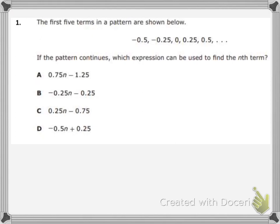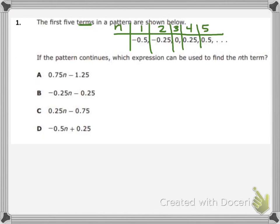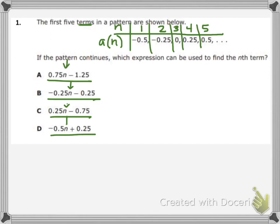Here's an example — an older star question. It says the first five terms in a pattern are shown below. When you see the word 'terms,' think sequence. Number those numbers 1, 2, 3, 4, and so on — those are the n values telling you which position they're in. The terms themselves are your outputs, your a sub n's. The question asks which expression can be used to find the nth term, so we'll try the pick three strategy.